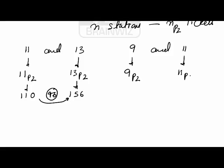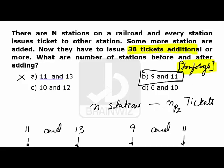9P2 means 72, and 11P2 makes 110. Now the number of tickets we see here is 38 additional tickets. When we see in the question, 38 additional tickets have to be issued, which is best matching with option B. Thank you.